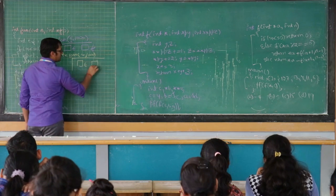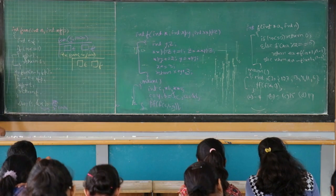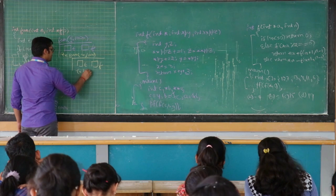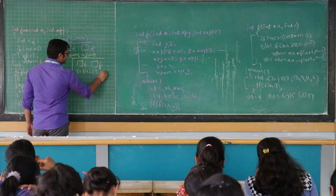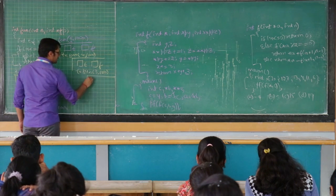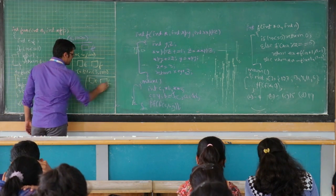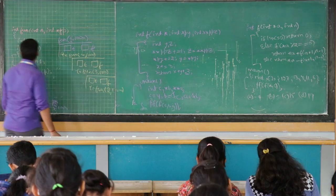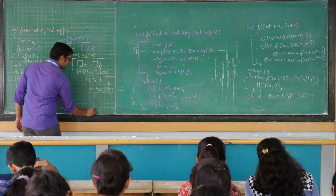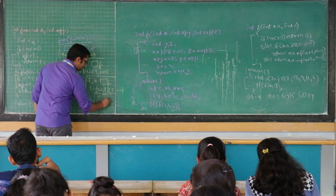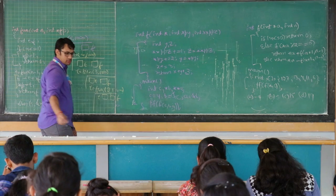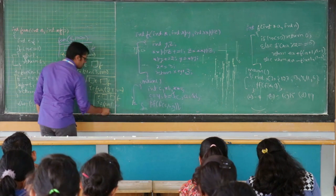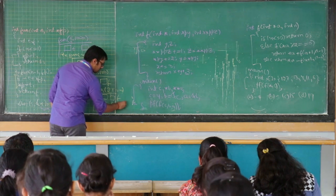Again we have two variables t and f, and this condition is false. We will execute the statement which says t is equal to fun of 3, 1000. Again, t and f — t is equal to fun of 2, 1000. Again, we have t and f where t is equal to fun of 1, 1000.